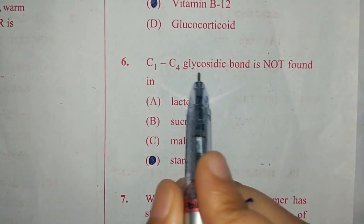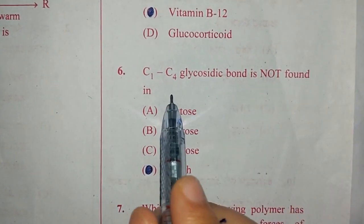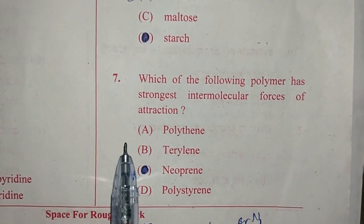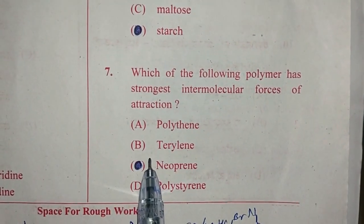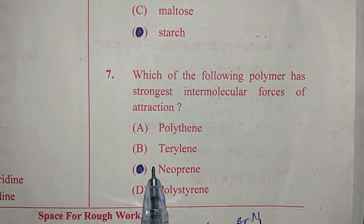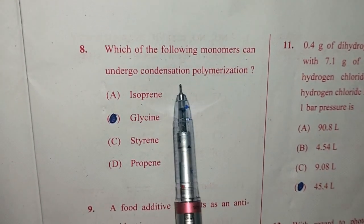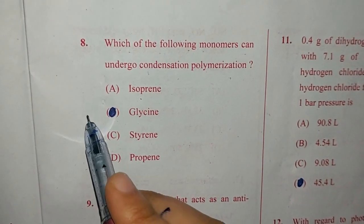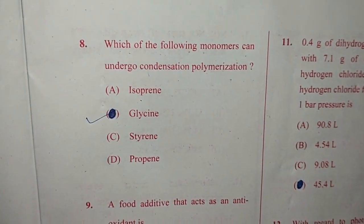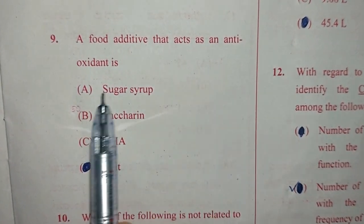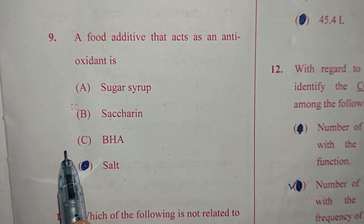C1-C4 glycosidic bond is not found in sucrose. Which of the following polymer has strongest intermolecular forces of attraction? It is terylene, option B. Which of the following monomers can undergo condensation polymerization? Answer is option B, glycine. A food additive that acts as an antioxidant is option C, BHA.